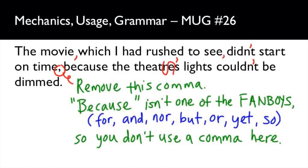Okay, first up, we have non-essential information dropped into the middle of the sentence. Whenever you do that, you're going to anchor it on either side with commas — just a little visual cue that you could lift "which I had rushed to see" up and out, and the main independent clause would still make sense. "Didn't" is a contraction, so we need that apostrophe right there.